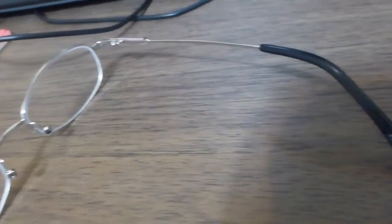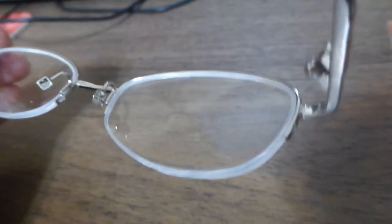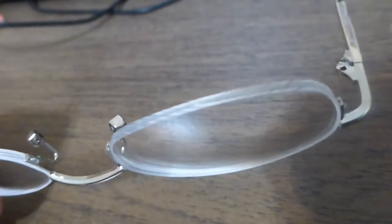Just making a note of which one is on the right side. These are half rims, so the lenses are held on with something like fishing line.